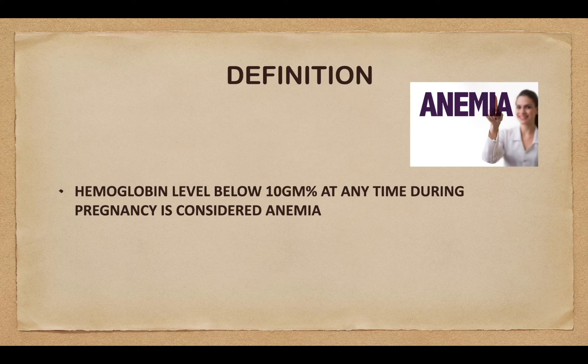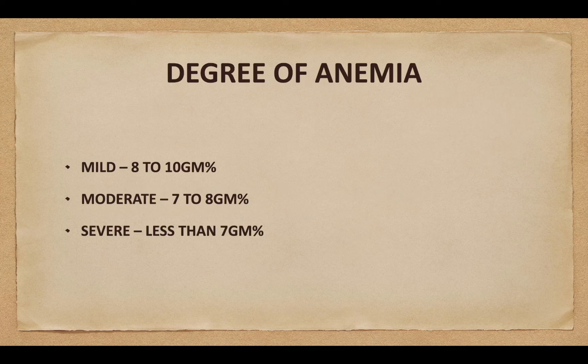Definition: hemoglobin level below 10 gram percentage at any time during pregnancy is considered anemia. Degrees of anemia — mild: 8 to 10 gram percentage; moderate: 7 to 8 gram percentage; and severe: less than 7 gram percentage.